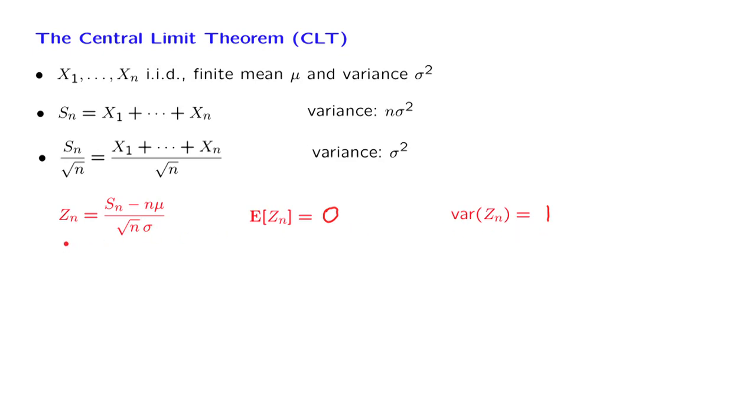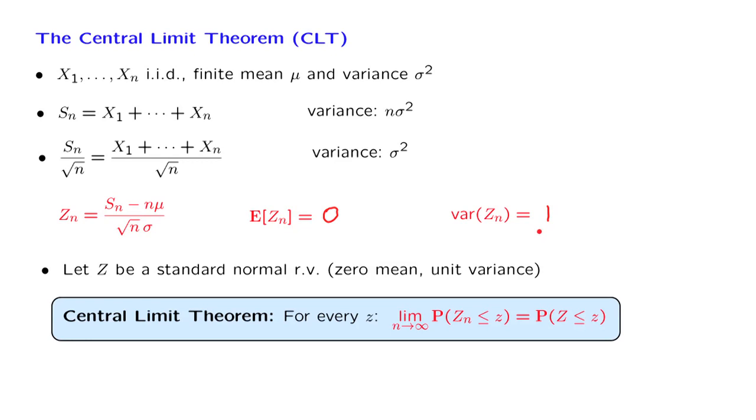We will compare this random variable with a standard normal random variable that has 0 mean and unit variance. The central limit theorem states the amazing fact that as n goes to infinity, the distribution of this random variable converges to the standard normal distribution in the following sense: that this probability here converges to that probability for any choice of little z. Now, what we have here is just the CDF of this random variable Zn. So it tells us that the CDF of the random variable Zn converges to the CDF of a standard normal.